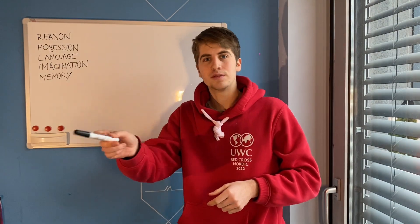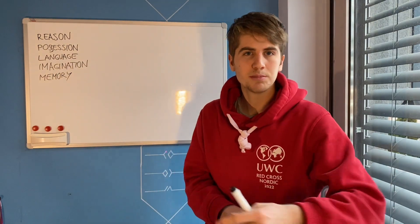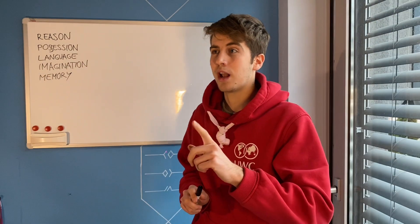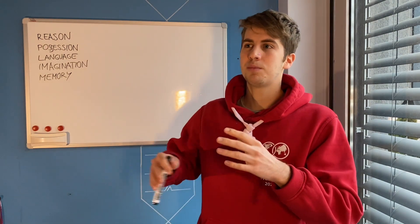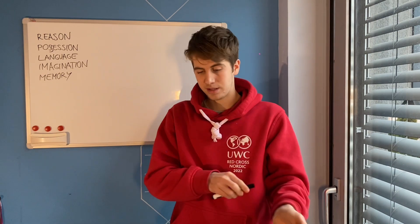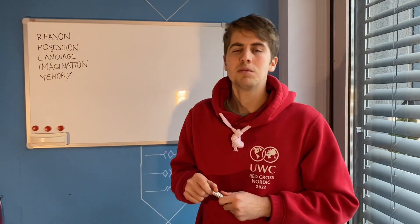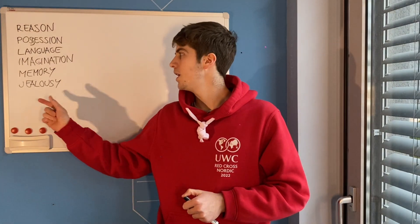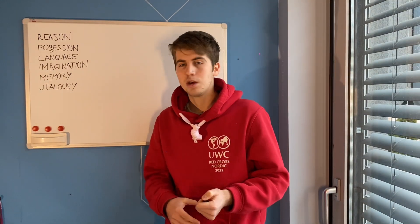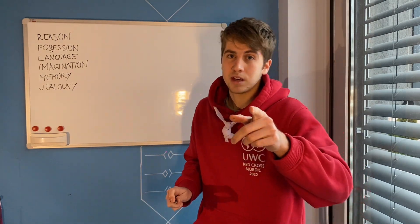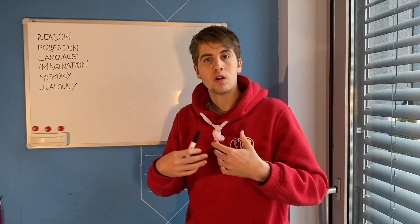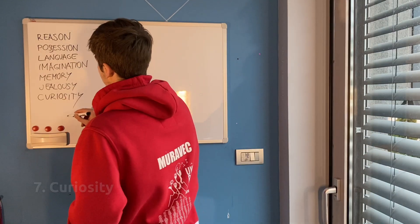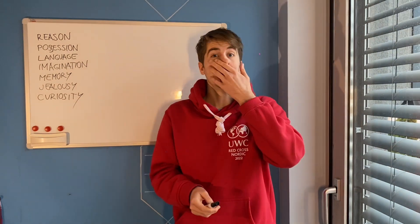Then there is memory. We can remember things — we can memorize all the material for a school subject. But elephants also memorize very well, and there's the case of a dog owner who was absent for five years; when he came back, the dog recognized him. Next is jealousy — humans can be jealous, which means our emotions are very evolved. You can see this in dogs too, when they get jealous their owner is petting another dog. This shows that animals and humans are both capable of loving someone and feeling the need to be loved.